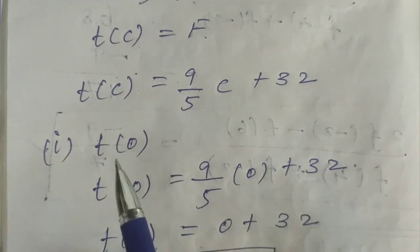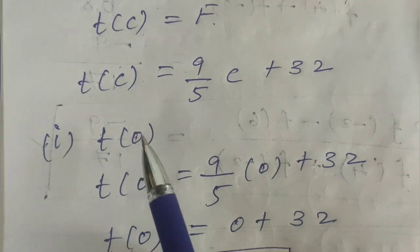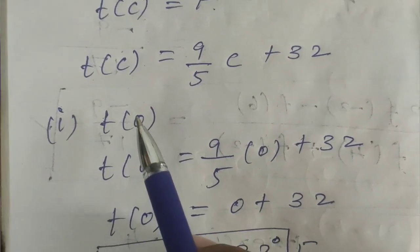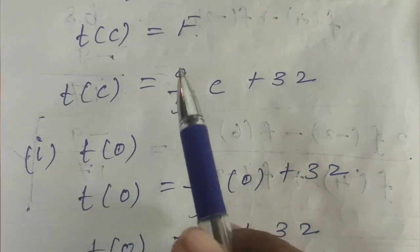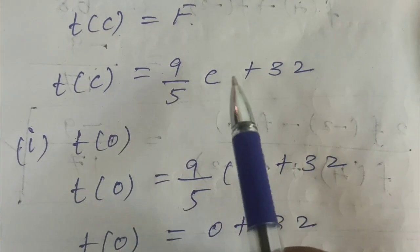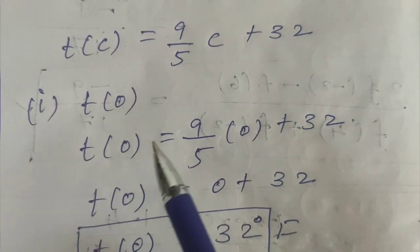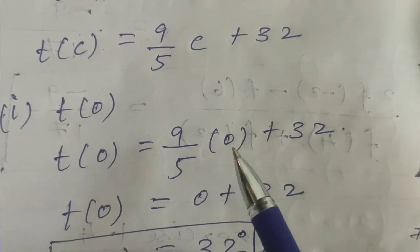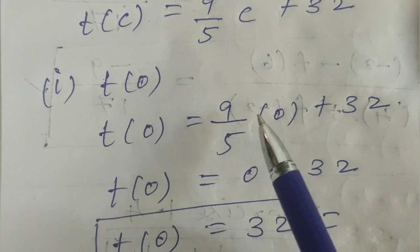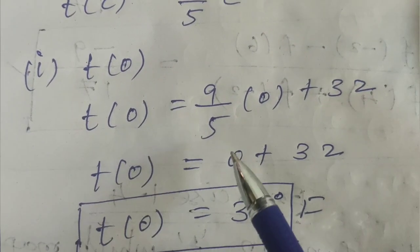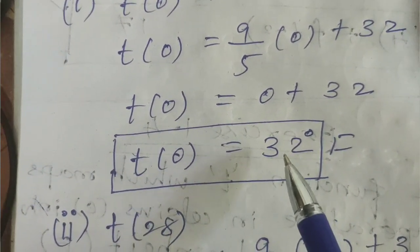The first sub-question: Celsius equals 0, that means T of 0. T of C equals 9 by 5 times C plus 32. We substitute C equals 0. Left hand side is T of 0, right hand side is 9 by 5 into 0 plus 32. Since 9 by 5 into 0 equals 0, T of 0 equals 0 plus 32, so T of 0 equals 32 degrees Fahrenheit.